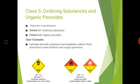The next category is class 5 — oxidizing substances and organic peroxides. It is divided into two divisions: 5.1 oxidizing substances and 5.2 organic peroxides. Divisions 5.1 and 5.2 each have their own symbols.